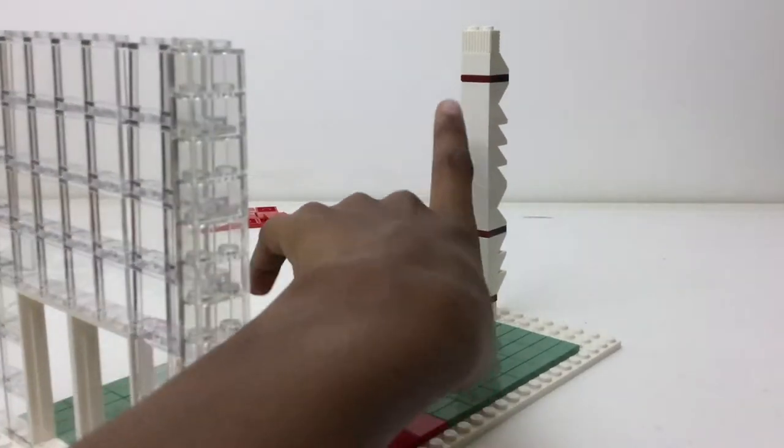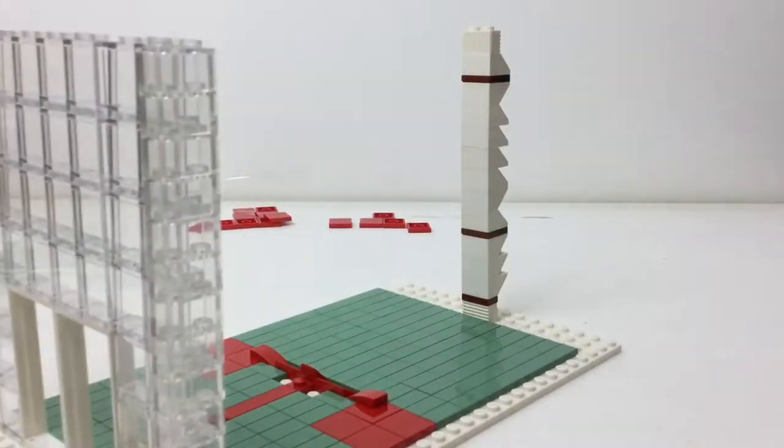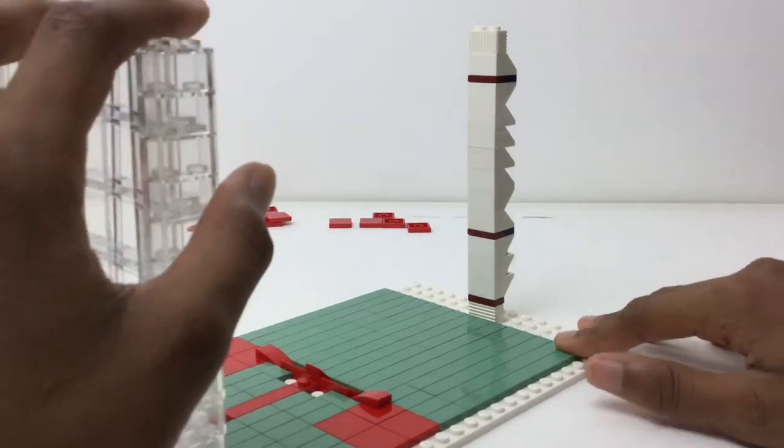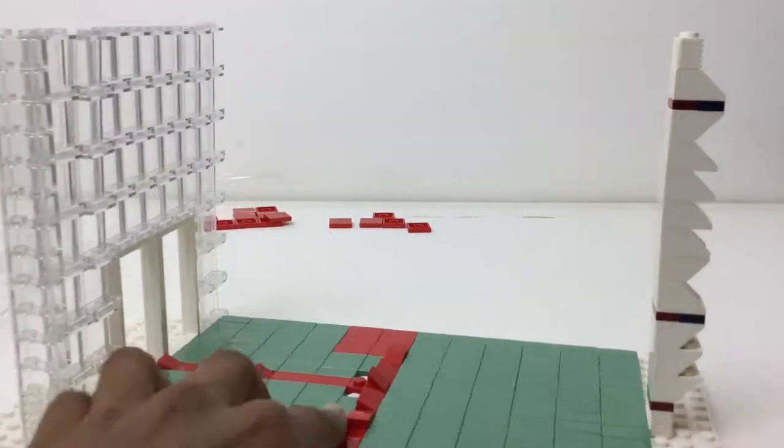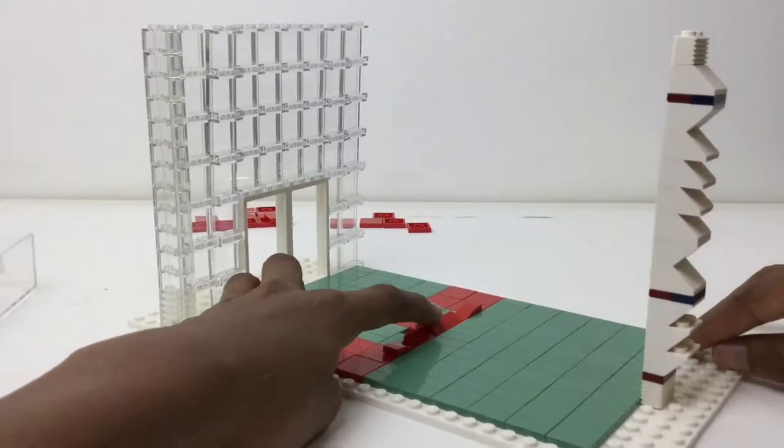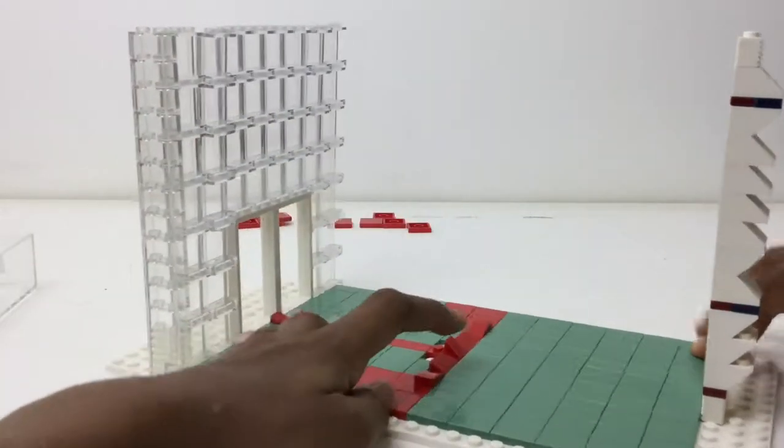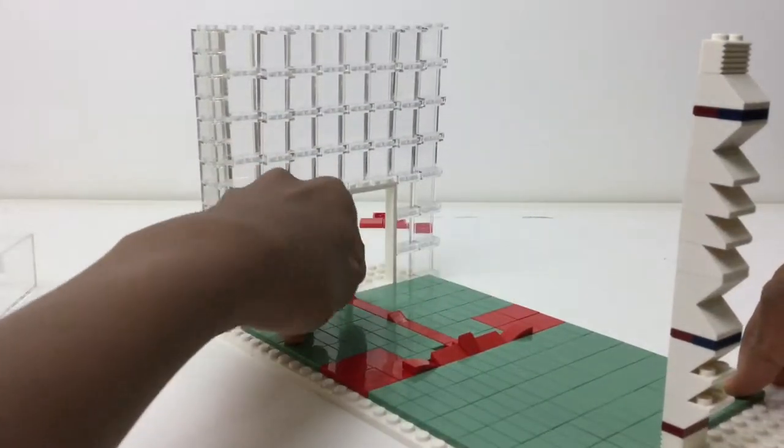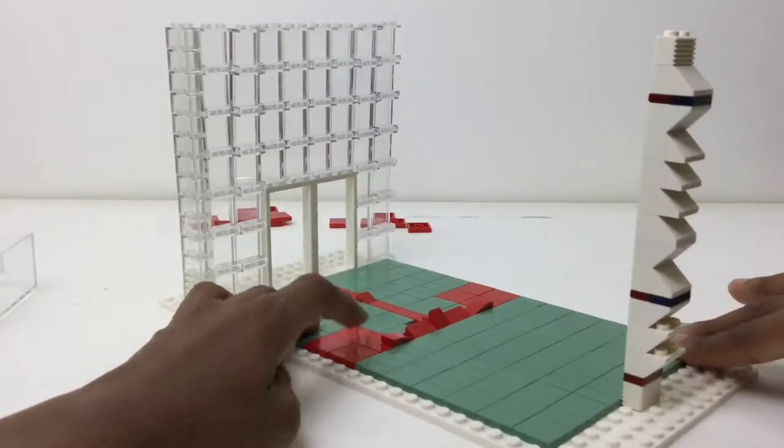If you don't know what a squash court looks like or you've never played, just search squash court and images will come up. There is a line going to half court and one going across. The reason I use these weird pieces is because I didn't have all smooth tiling ones.